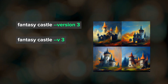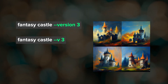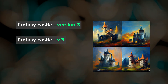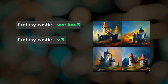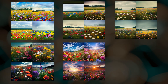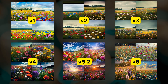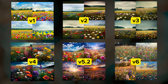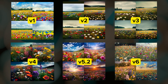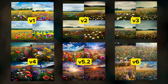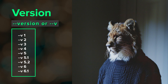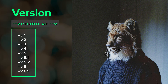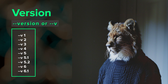Some parameters have two ways that they can be called. For example, either --version 3 or --v3 will run my prompt with the v3 model. Each Midjourney model has a specific look and prompt understanding, so it can be really fun to try prompts across different versions to see how much Midjourney has changed over the last few years.